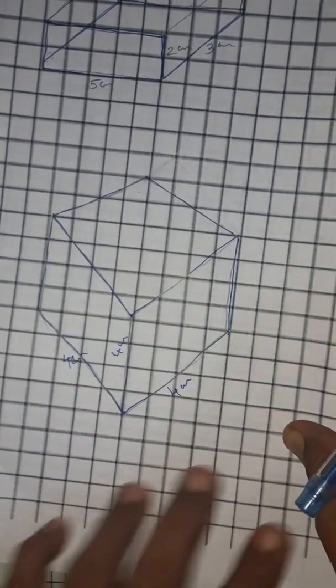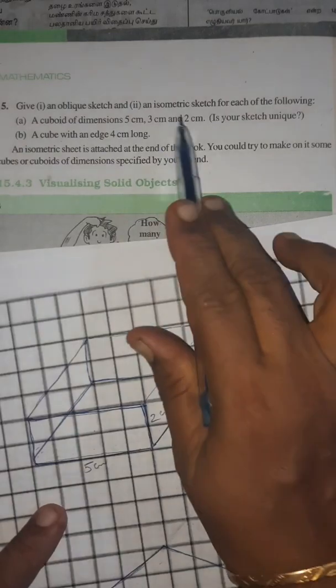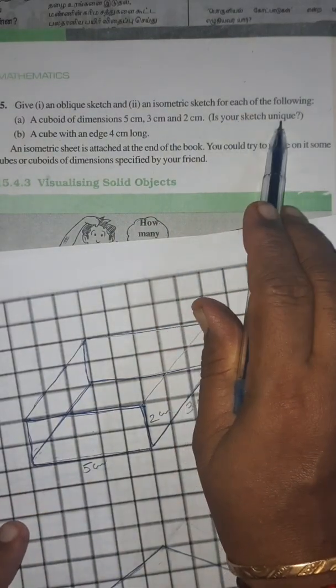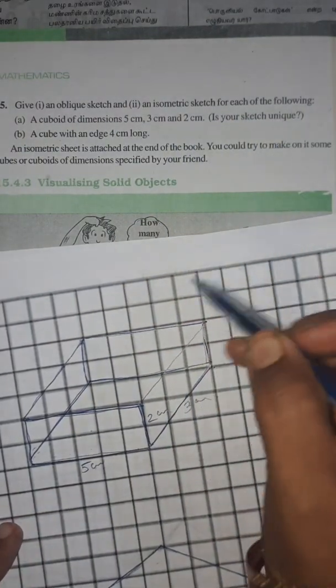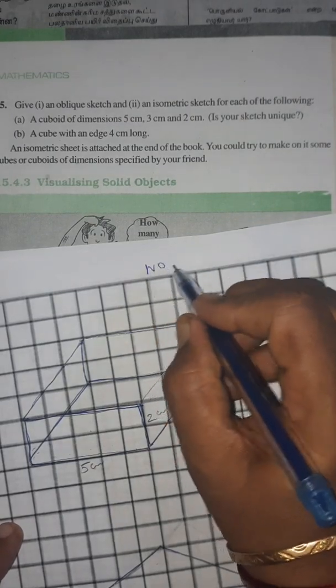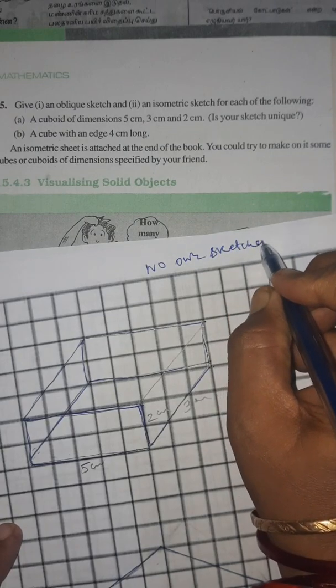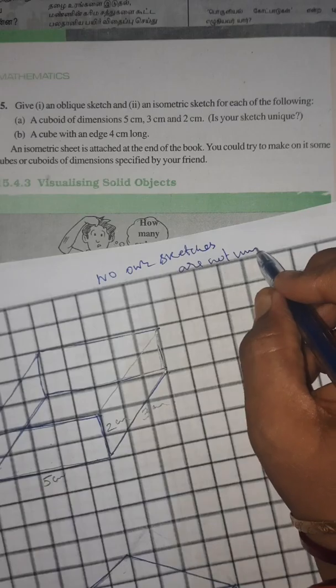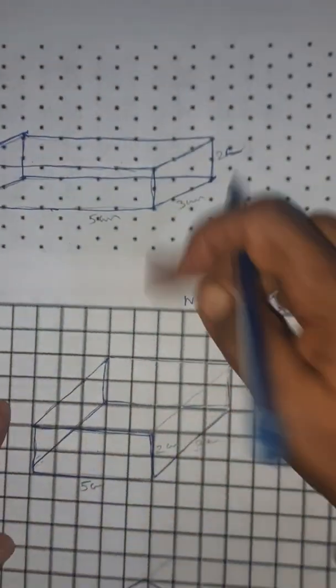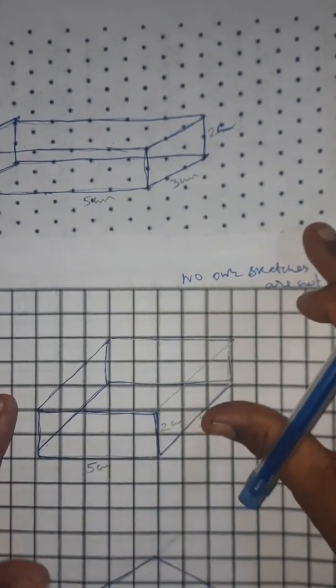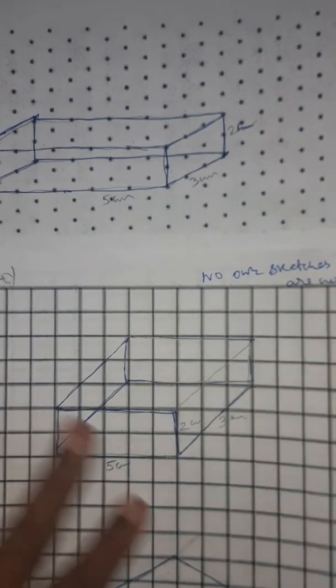Oblique sketches — then what they are asking is: are your oblique sketches unique? No. The sketches are not unique. Both the oblique and isometric sketches are not the same diagram. That's it, thank you.